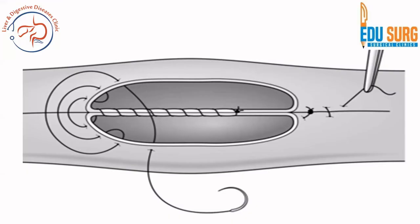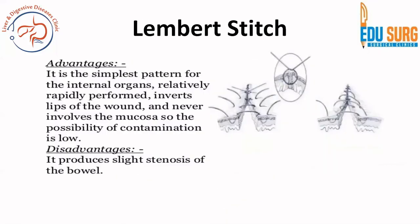The full-thickness Connell stitch involves going from outside to inside, then inside to outside on the same side, then on the other side again outside to inside and inside to outside — two bites on each side. This layer continues progressing in a direction of outside-in, inside-out, outside-in, inside-out. On the other hand, the Lambert stitch — an extramucosal stitch — is the simplest pattern for intestinal organs, involving the lips of the bowel but never the mucosa. This is the Lambert stitch and some people do extramucosal single-layer anastomosis using Lambert stitches, though it can lead to slight stenosis of the bowel and so is not routinely used. The standard practice is the four-layer pattern.